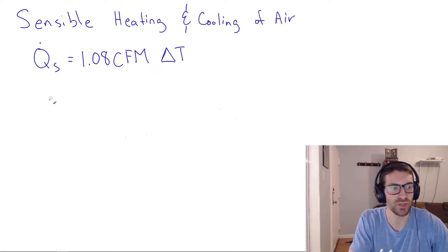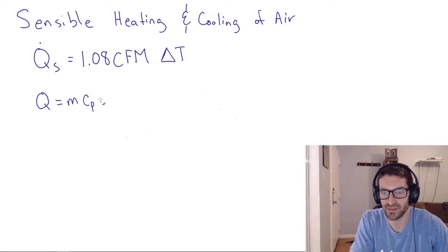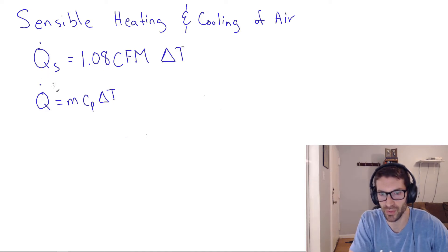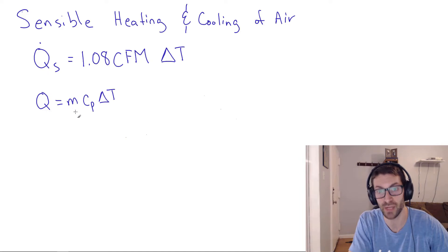And this formula is really derived from, ultimately from, Q equals MCP delta T. I'm not going to go through that derivation here, because the point is to give you the rule of thumb. But you could imagine, if this is an energy rate, if we divide by time, then you could turn the mass into a mass flow rate, and then you can multiply by the density, and you'd have the volume flow rate. And then all you need is to do a unit conversion from seconds to minutes, or minutes to hours, and then including the specific heat capacity of air.